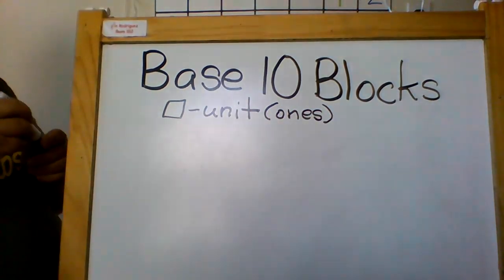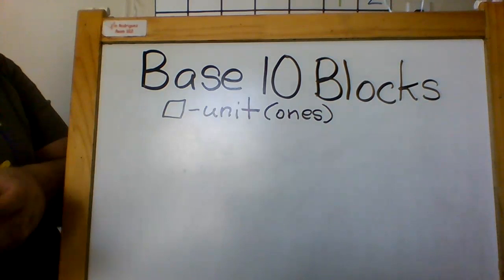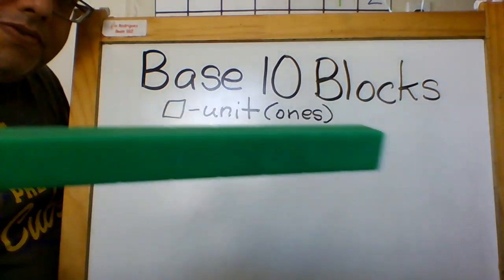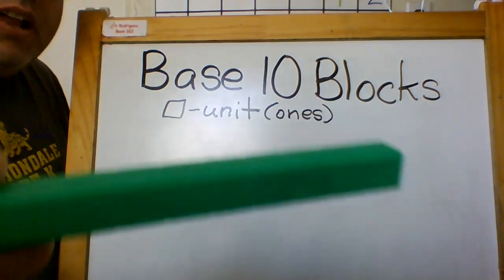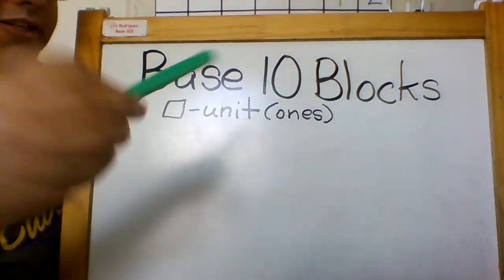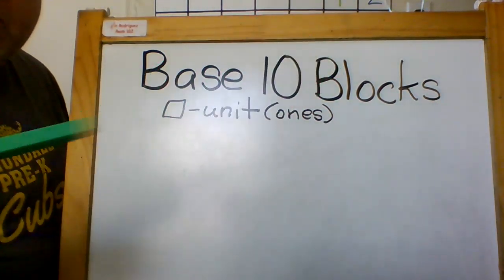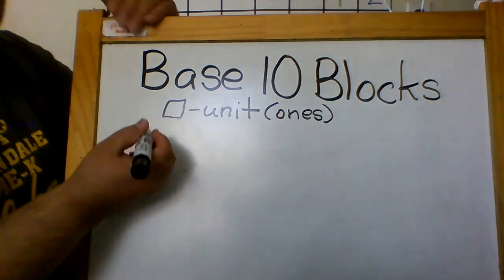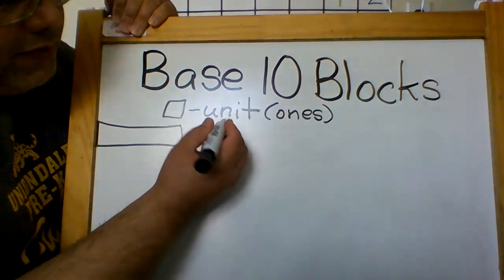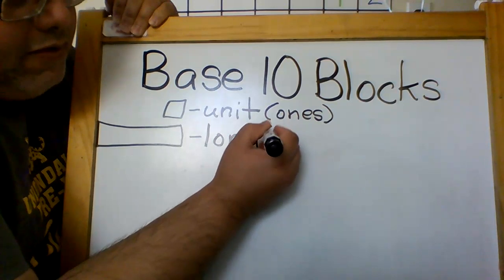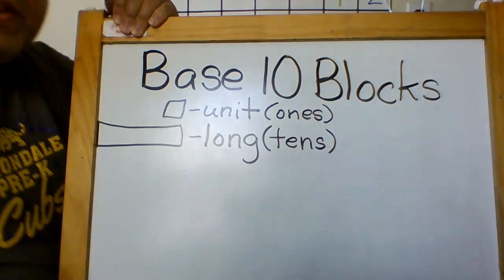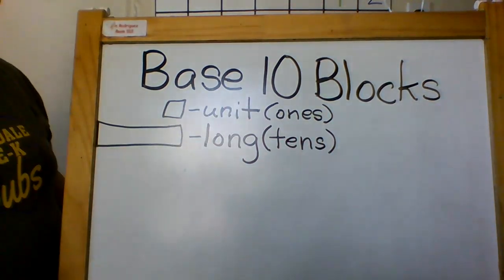Now you're going to see another one that's a little different. You see this one? This is a long. You see how long it is? It has ten of those units — ten of these all together. It's called a long. So I'm going to pretend they just have ten, and this is going to be called a long. In math we call it tens.